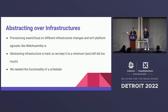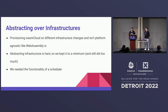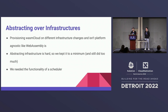We also abstracted over infrastructure — provisioning Wasm Cloud on different infrastructure is not platform agnostic for obvious reasons. Wasm Cloud is very good at scheduling these applications, but we needed functionality to schedule the actual Wasm Cloud processes. Abstracting the infrastructure is still really difficult — we kept it to a minimum and probably still did too much. We needed the functionality of a scheduler, and so we came up with our custom thing for Nomad. If we could do it all again from the beginning, we would just get the Nomad scheduler from the get-go rather than trying to abstract over that with WebAssembly. That's one part where we thought it could work out well and it didn't.